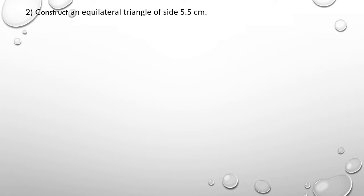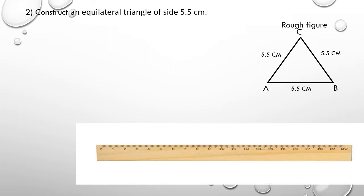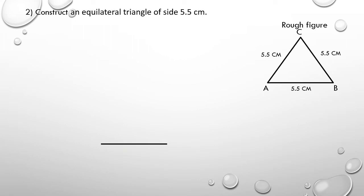Now let us see how to construct an equilateral triangle of side 5.5 centimeter. For this we must draw a rough figure — name it as ABC, with each side measuring 5.5 centimeter. Take your ruler, measure 5.5 centimeter, and draw a line segment.